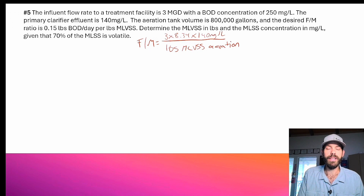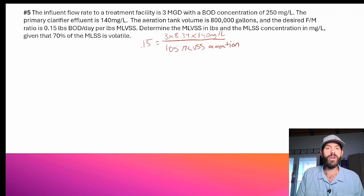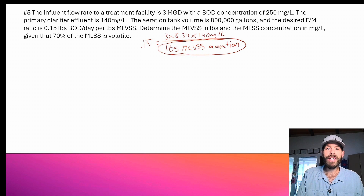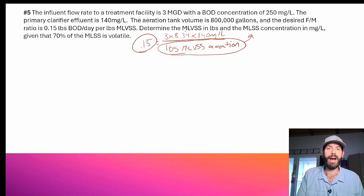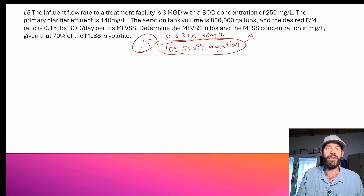I know my target F:M ratio is 0.15. So my goal here is to figure out my pounds MLVSS in aeration and then convert that to an MLSS concentration — so I know the MLSS I should be running in my aeration basin to achieve a 0.15.